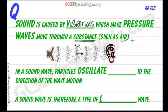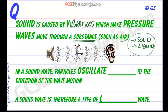That substance could be air, but it could also be a solid — a metal bar for instance — or it could be a liquid, like whale song moving through the oceans. And in these two cases, the speed of sound is much faster than in air.